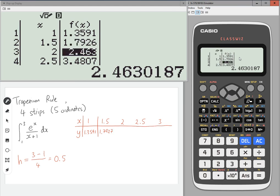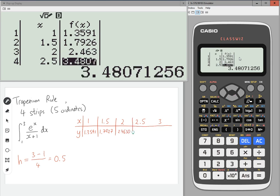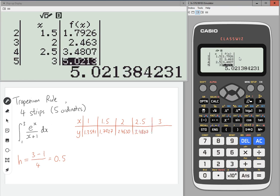Then we've got 2.4630, then we've got 3.4807, and then 5.0214.